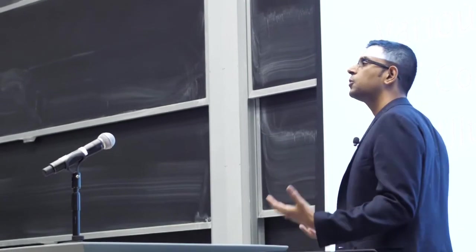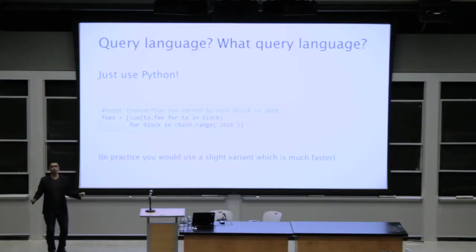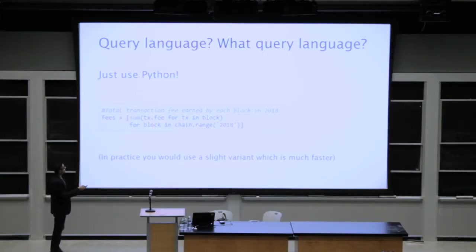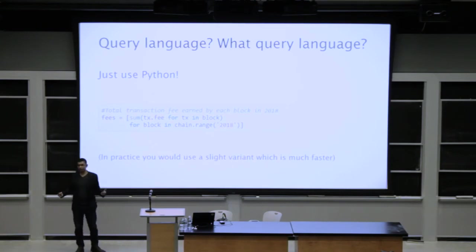The question I get most frequently when I explain BlockSci is: what is the query language the programmer uses to analyze the data? Here's my absolute favorite thing about BlockSci — there is no query language. You write code in full-featured Python, the way you're used to. You don't have to learn a new query language or accept the limitations of SQL. Here's a piece of code that iterates over every block in a certain date range, iterates over every transaction in that block, and gets the fee — getting total transaction fees earned by each block. This is literally the most natural way to write this query in Python, and it works directly in BlockSci.